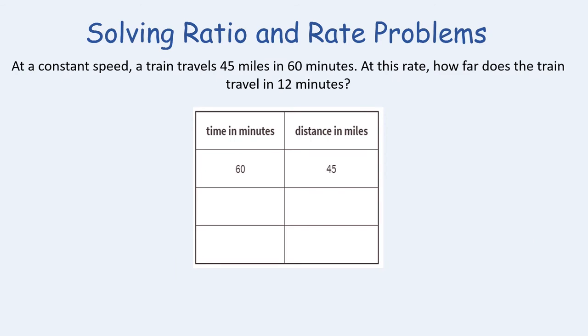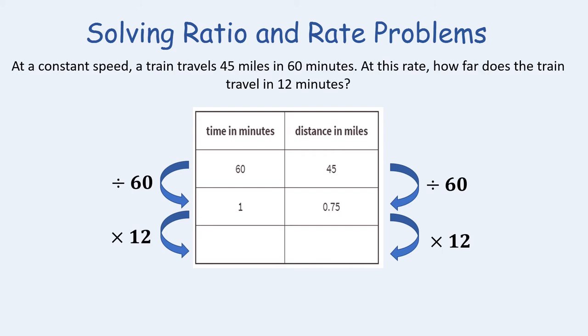Let's look at a ratio table with a different problem. A train travels 45 miles in 60 minutes at constant speed. How far does the train travel in 12 minutes? First, divide both values by 60 to get the unit rate: 60 divided by 60 is 1, and 45 divided by 60 is 0.75 miles — which is three-fourths of a mile. Then multiply both by 12 to get 9 miles. So the train travels 9 miles in 12 minutes.